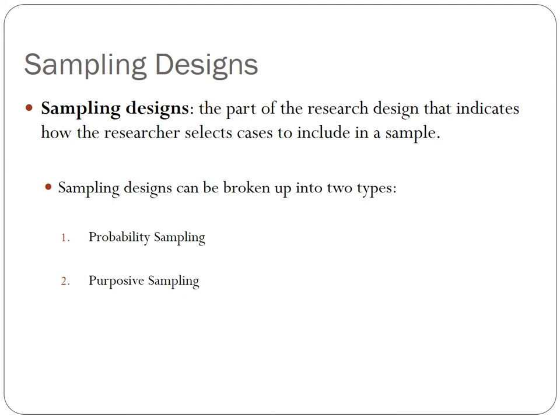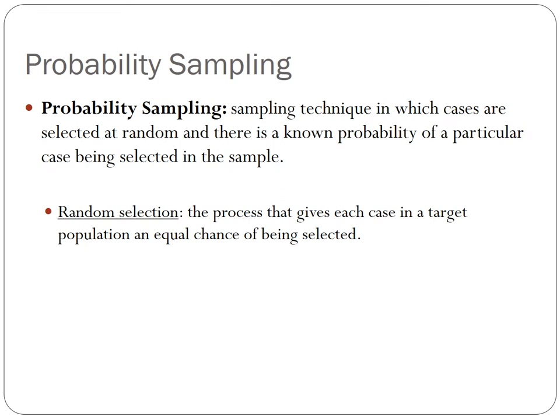Sampling designs in the social sciences can be broken up into two general types: probability sampling and purposive sampling. Probability sampling is a sampling technique in which cases are selected at random and there is a known probability of a particular case being selected into the sample. Random selection refers to the process that gives each case in a target population an equal chance of being selected into the sample. If the selection of cases isn't random — meaning some cases have no chance of selection or are certain to be included — then the sample isn't truly random.